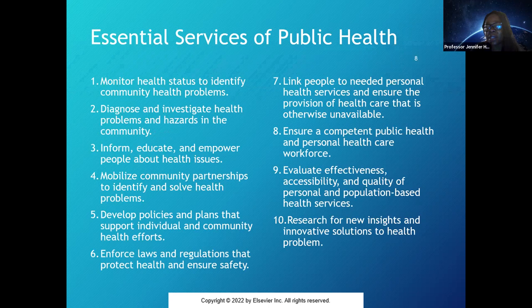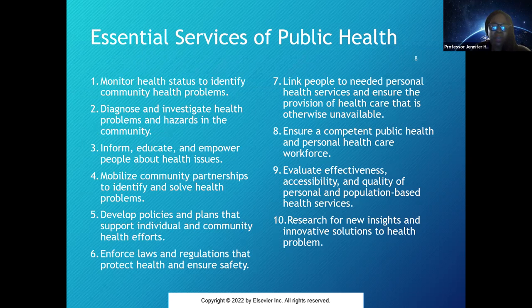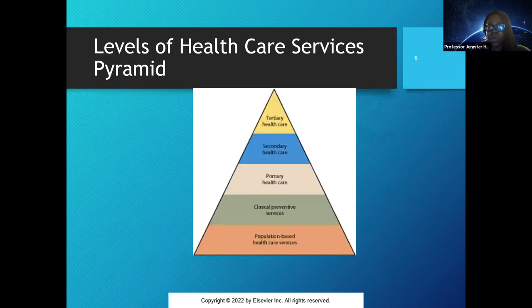There are 10 essential services of public health — this slide is very important. These came about with the U.S. Public Health Service, which is the organization I work for, and were developed to emphasize the population focus and the central public health functions most effective at improving health care of the population. They also developed a pyramid for levels of health care services, focusing on disease prevention, health promotion, and protection across primary, secondary, and tertiary prevention services.